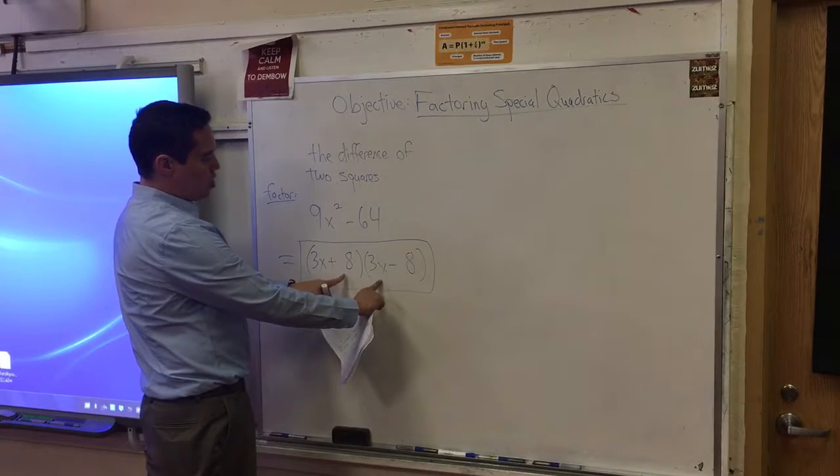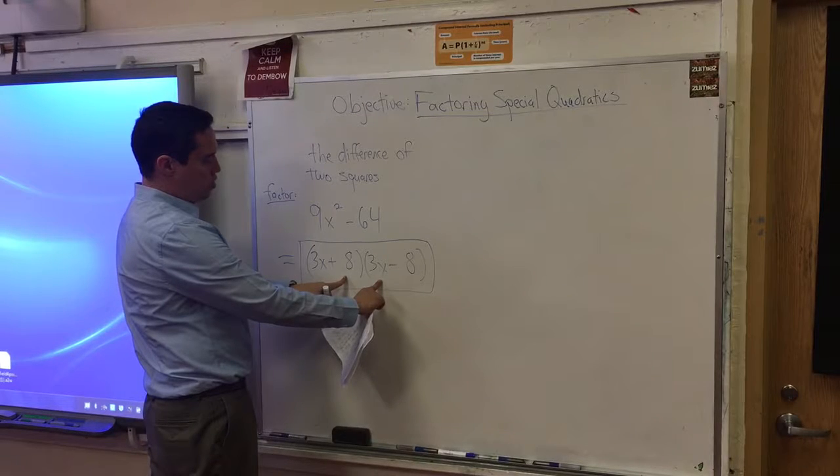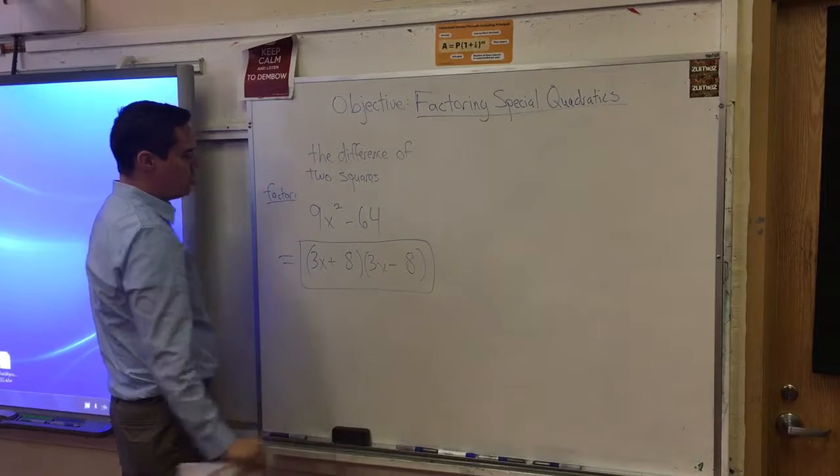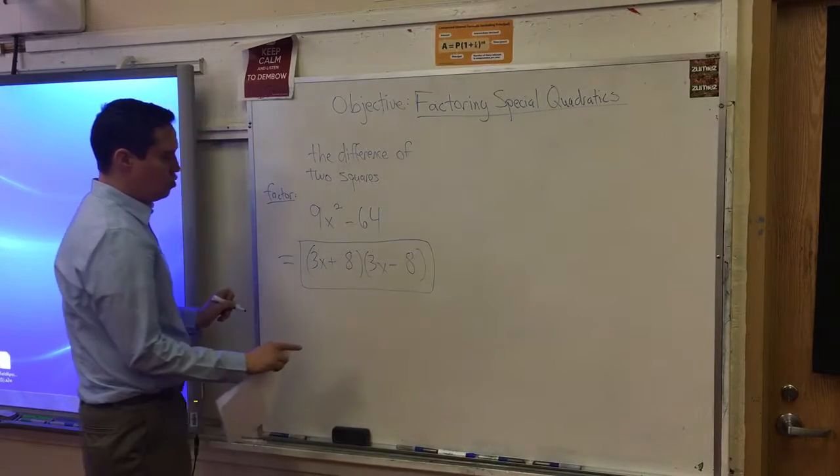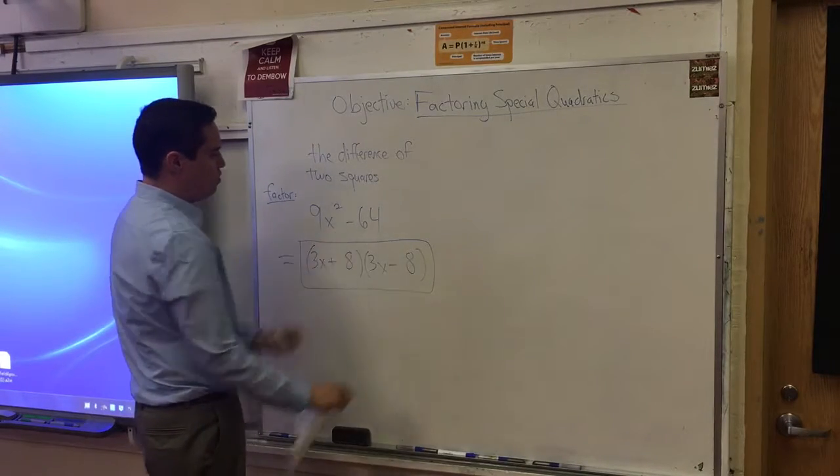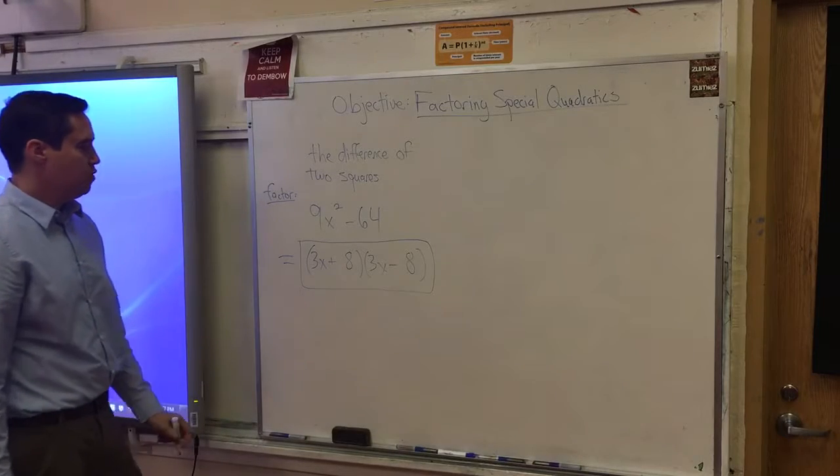8 times 3x, positive 24x. Those will cancel and will leave us with this last one, negative 64. So that's the difference of two squares.